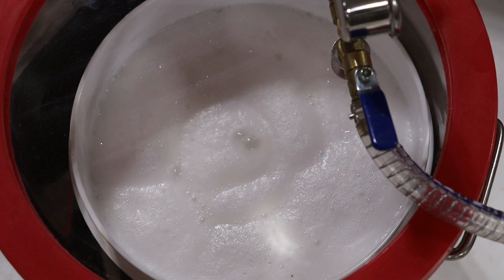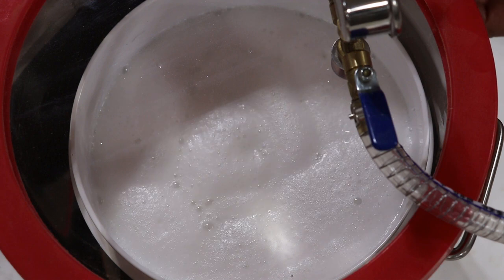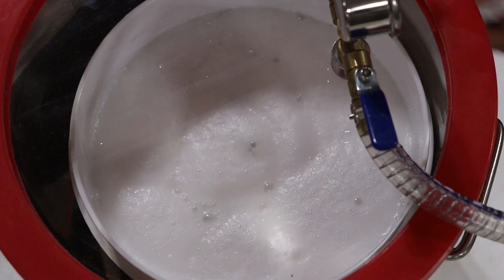That's pulling 29 inches of mercury vacuum. The lid just sits on the top with the silicone rim on it - it seals as it pulls down, it just seals itself.